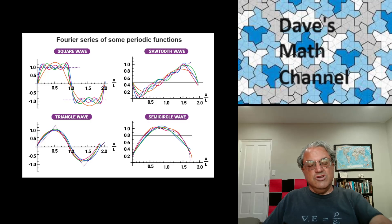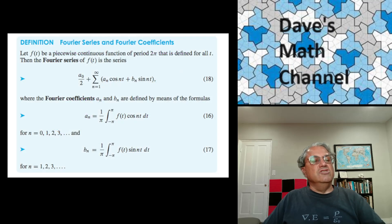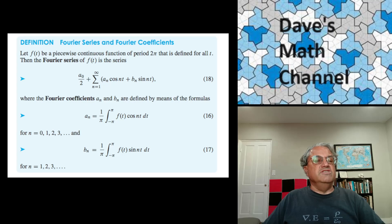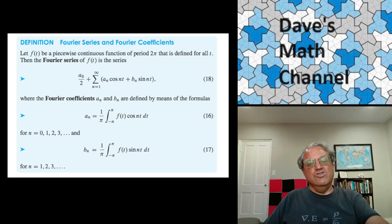The more components you add, the closer it gets to the wave you started with. That's how you can build any wave from its pure components. There are complicated mathematical formulas for computing Fourier series. I don't want to get into how to compute them right now, but I just want to show that there are formulas for computing the Fourier series of any periodic wave. This is one of the first things you learn when you learn about Fourier series.